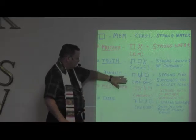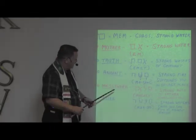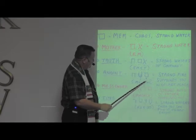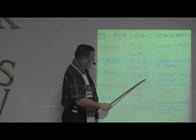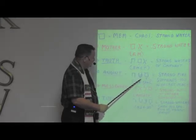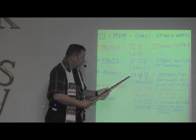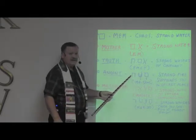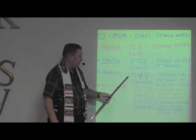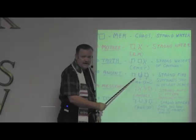Now, anoint — would you like to know what anoint means? We have the mem. This little T thing here is the A. Then we have the shin, the SH sound. The A again. And this looks like an N, doesn't it? But this is the chet, which is the CH sound. So this is M-A-S-H-E-C-H.